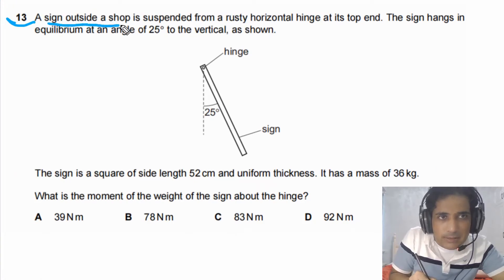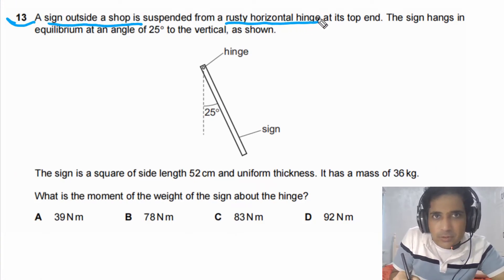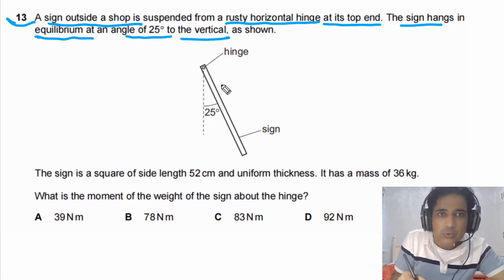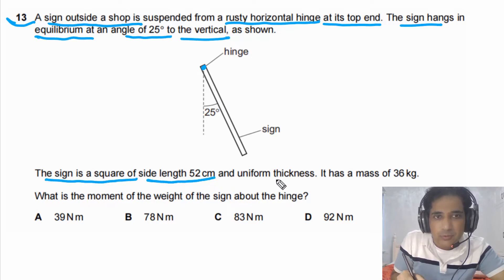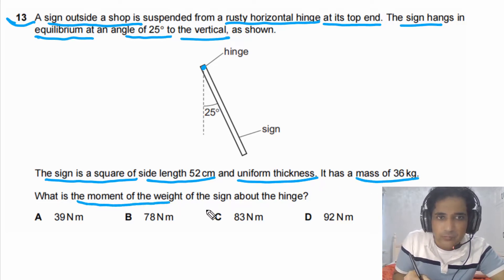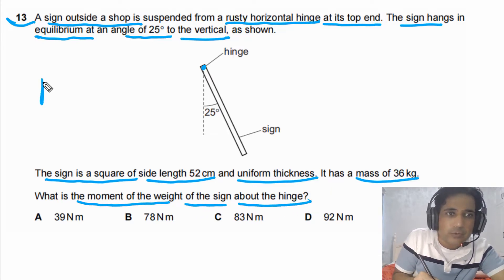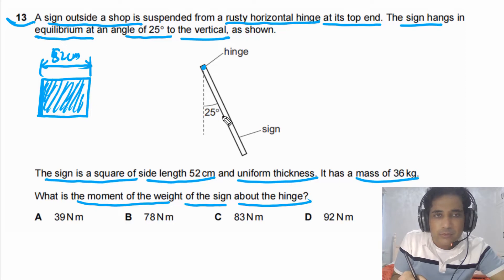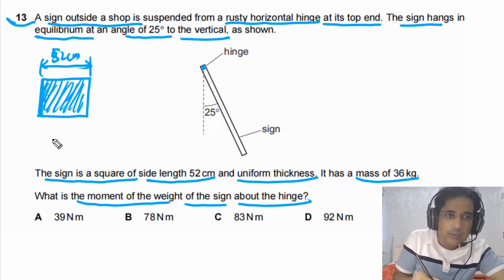For question number 13, a sign outside a shop is suspended from a rusty horizontal hinge at its top end. The sign hangs in equilibrium at an angle of 25 degrees to the vertical as shown in the figure. The hinge is at the top point. The sign is a square with side length 52 centimeters, has uniform thickness, and has a mass of 36 kg. We need to find the moment of the weight of the sign about the hinge.